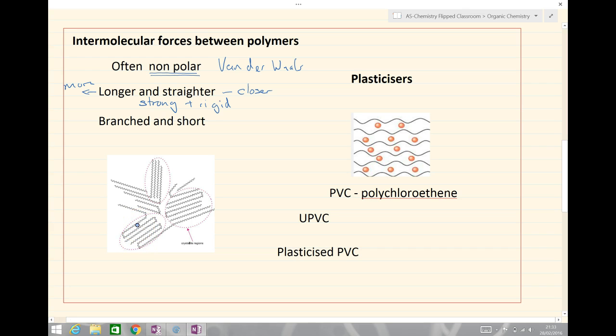On the other side, if we've got a branched molecule and short chains, our intermolecular forces result in the polymer being relatively weak and also flexible.